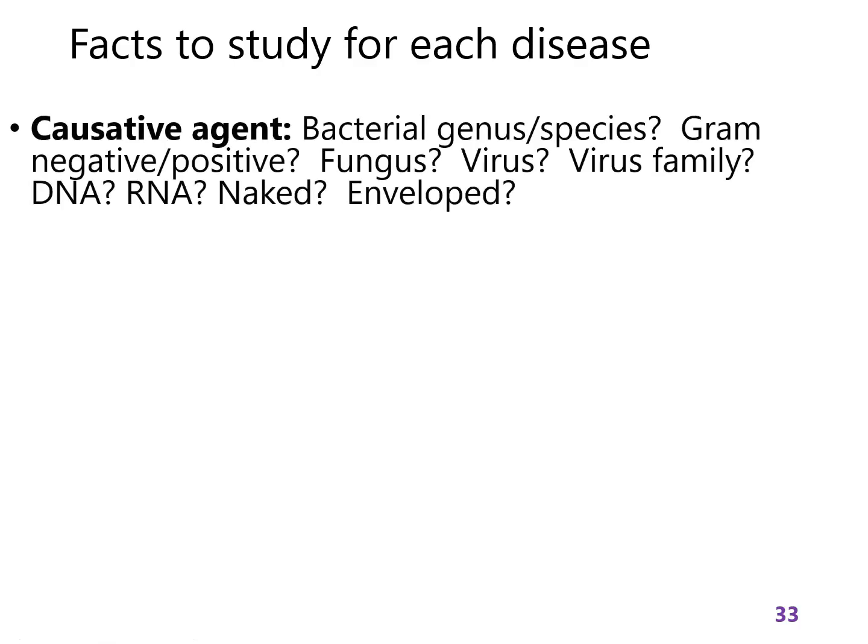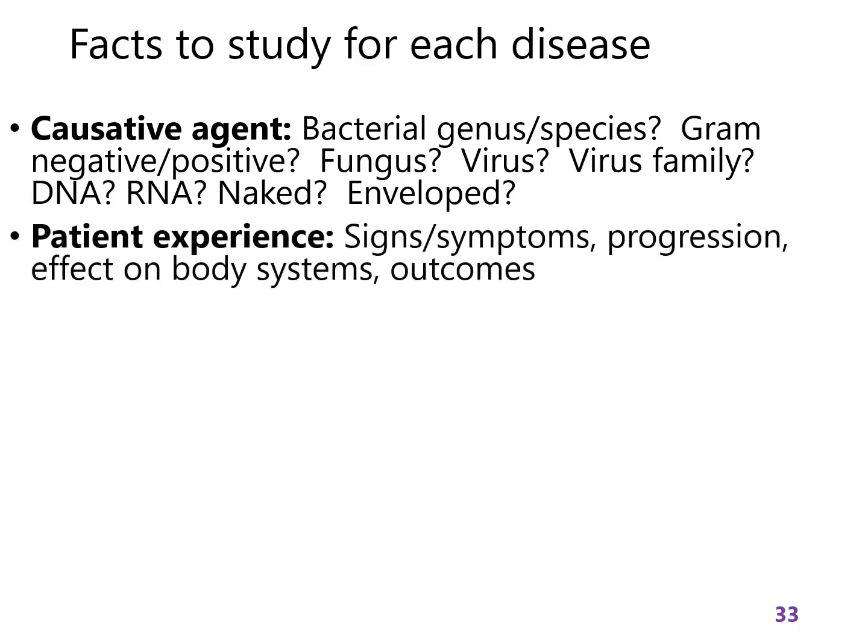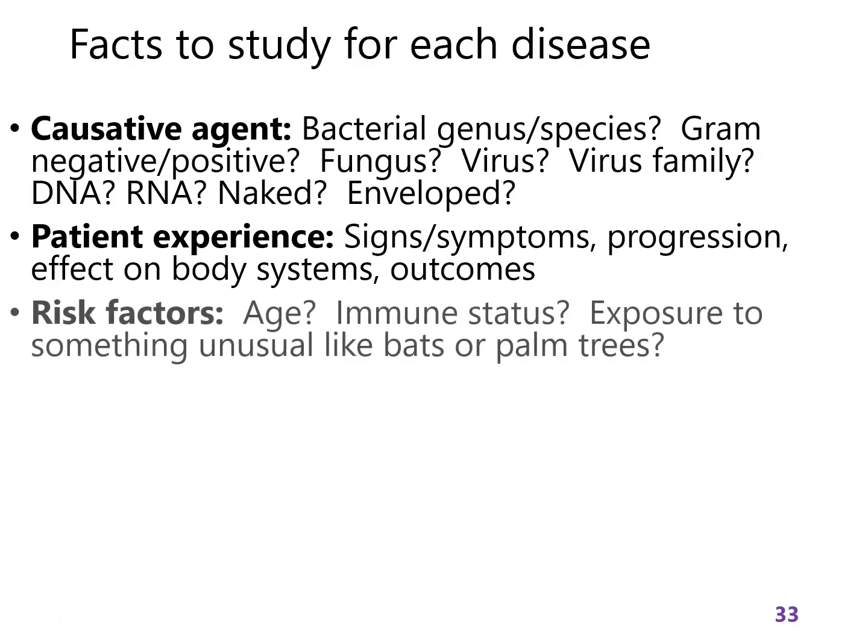Here is a list of the facts you would want to memorize for every disease. First, the causative agent — what is it, and what characteristics of it would be memorable, but definitely what is it called. That's the first thing to memorize, and you'll get points on the exam just by knowing which organism causes which disease. Then, what is the patient going to go through? What are the signs and symptoms? How does it progress — does it get worse or better? Which body systems are affected? And what are the common outcomes — does the person get better or not?